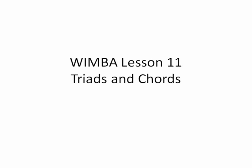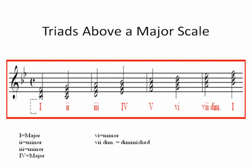Lesson 11 is triads and chords. Some people use the terms interchangeably, but actually a triad only has three tones in it, and a chord has four or more. When talking about only three tones, I'll use the term triad. We're going to go through major triads, minor triads, diminished, and augmented — those are the ones in your lesson.